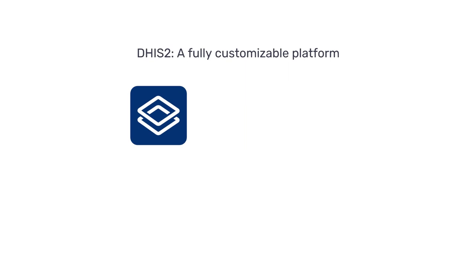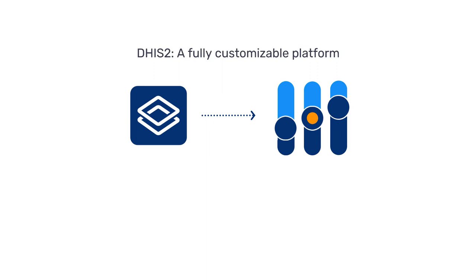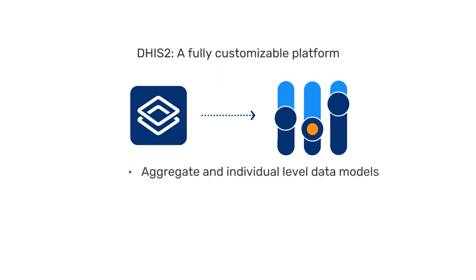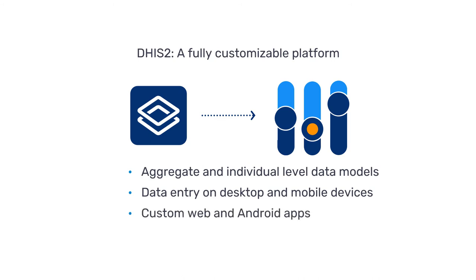DHIS2 is a flexible, open-source platform that can be customized to meet a wide range of requirements. It supports both aggregate and individual-level data models, data entry on desktop and mobile devices, the creation of custom web and Android apps, and integration with other software platforms through open APIs.